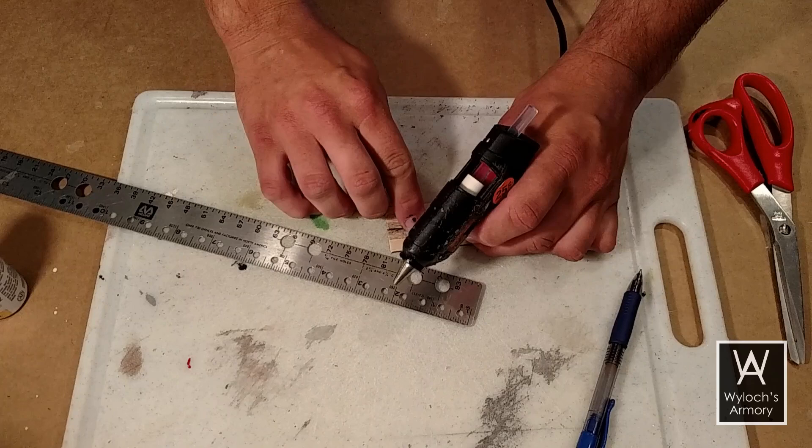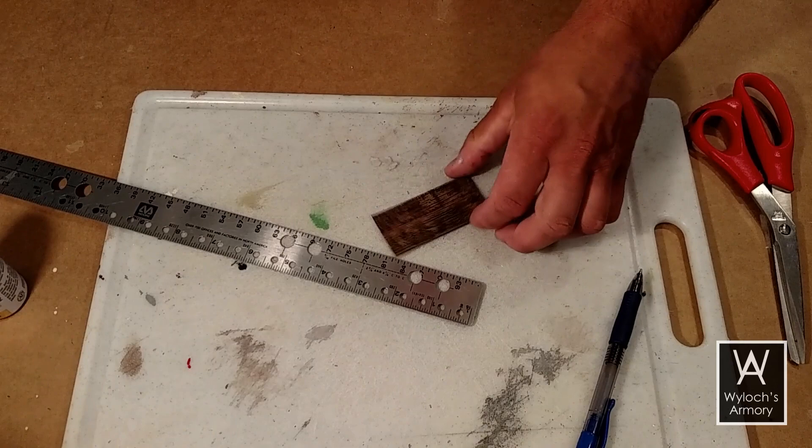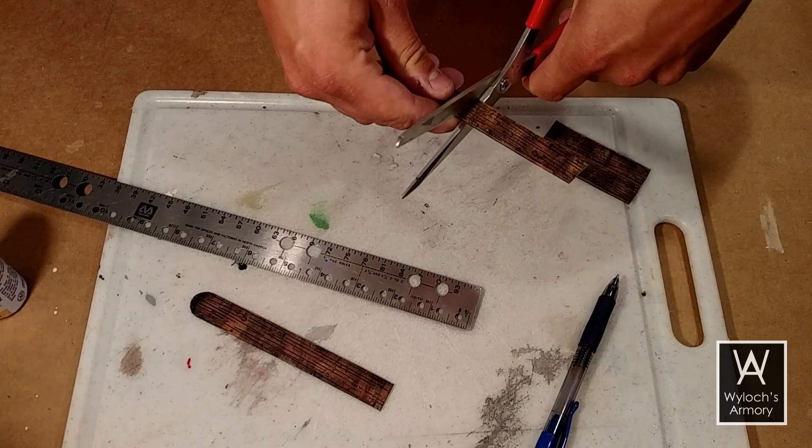On the underside, hot glue some scrap pieces to join them together. And while you're at it, chop two additional three inch segments.